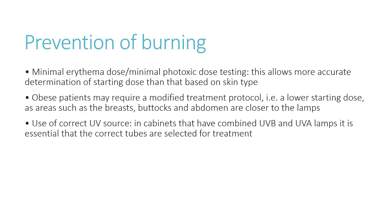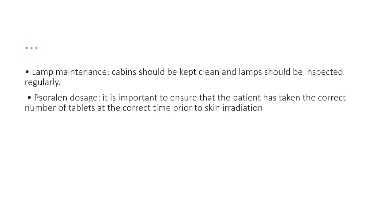To prevent burning risk: minimal erythema dose or minimal phototoxic dose testing allows more accurate determination of starting dose than skin type alone. Obese patients may require a modified protocol with a lower starting dose, as areas such as the breasts, buttocks, and abdomen are closer to the lamps. It is essential that the correct UV source is selected in cabinets with combined UVB and UVA lamps. Lamp maintenance is important — cabins should be kept clean and lamps inspected regularly. Psoralen dosage must be verified to ensure the patient has taken the correct number of tablets at the correct time prior to irradiation.